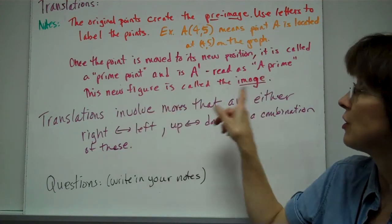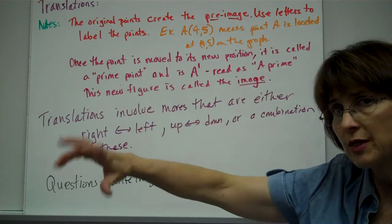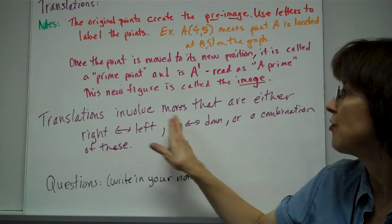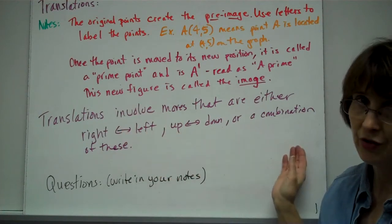This new figure is called the image. Translations involve moves that are either right to left, left to right, up or down, or a combination of these.